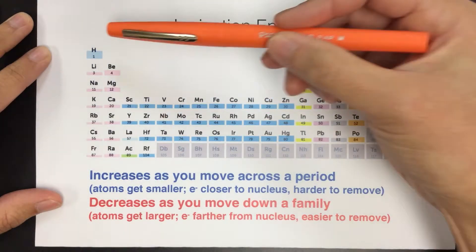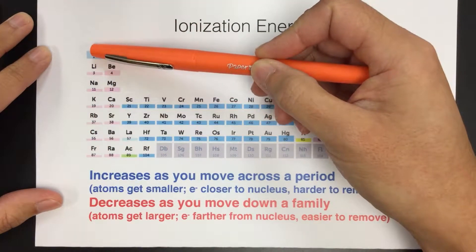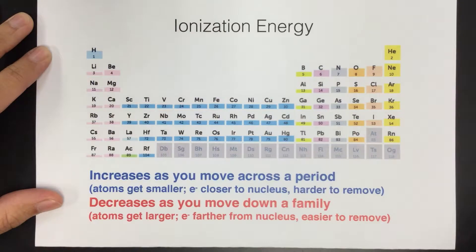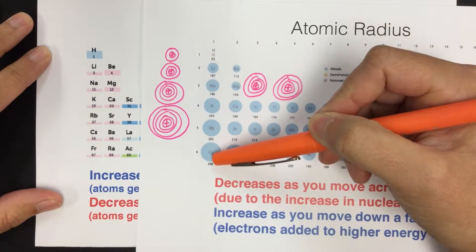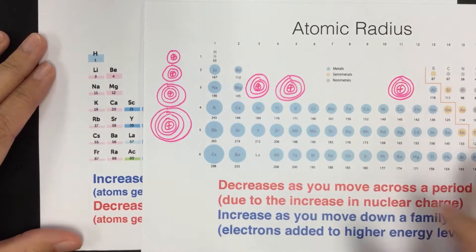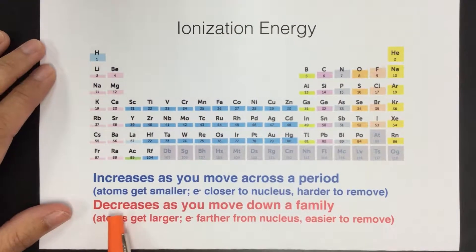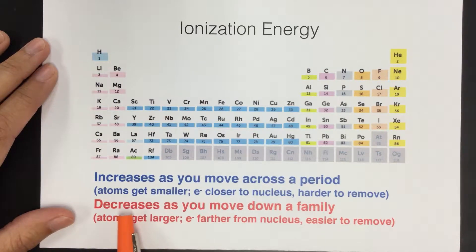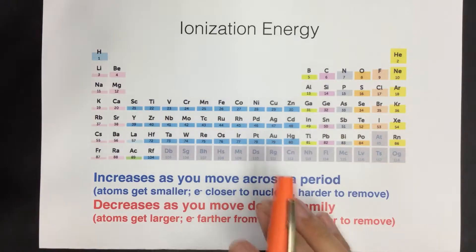The trend as we go down a family is also related to atomic radius. As we go down, the size of the atoms gets bigger, so you're holding the football or the electron farther and farther away from you, making it easier for someone to take it away. So as we go down, ionization energy actually decreases — it requires less energy to take the electron if it's farther away from the nucleus, because those atoms are larger and their electrons are farther away.